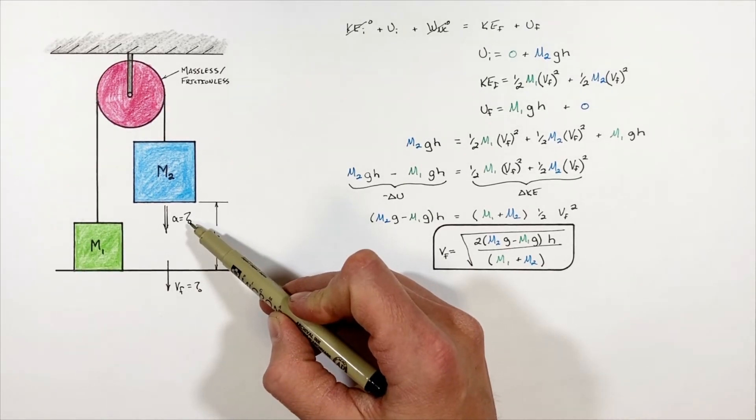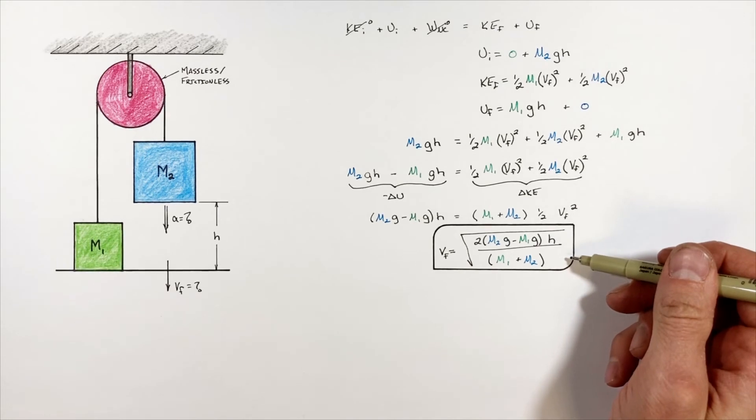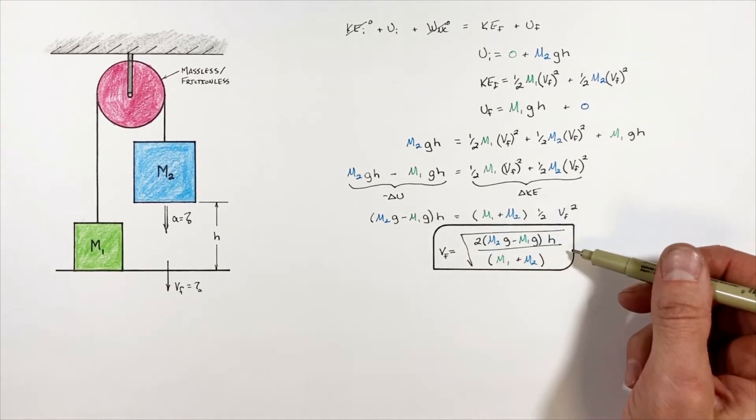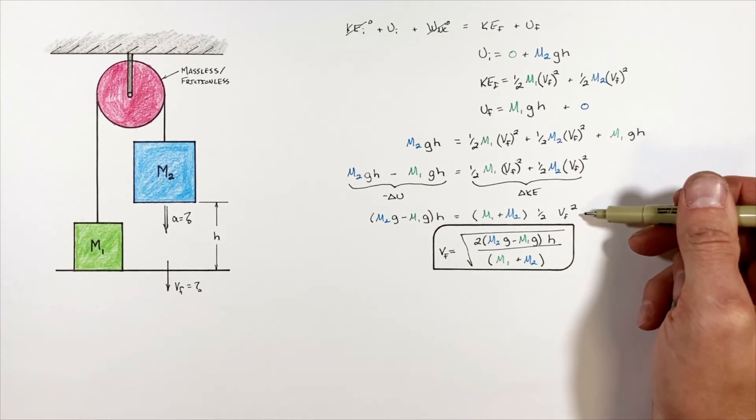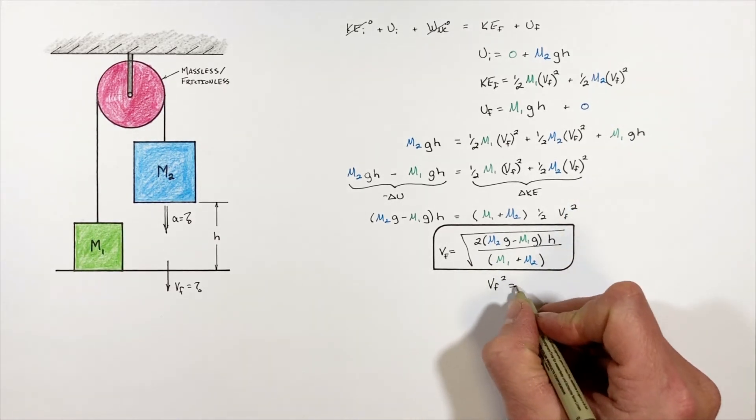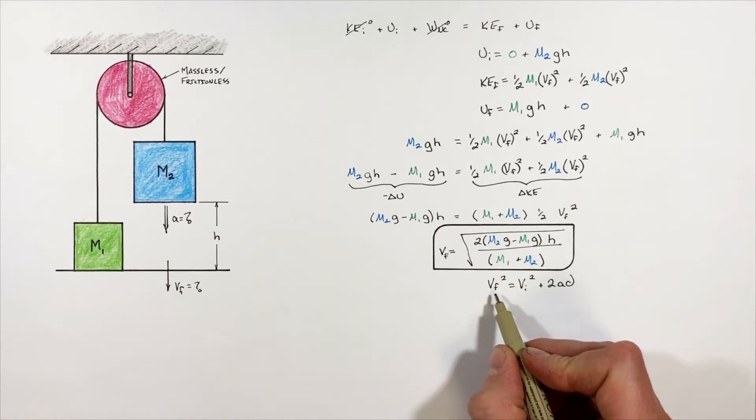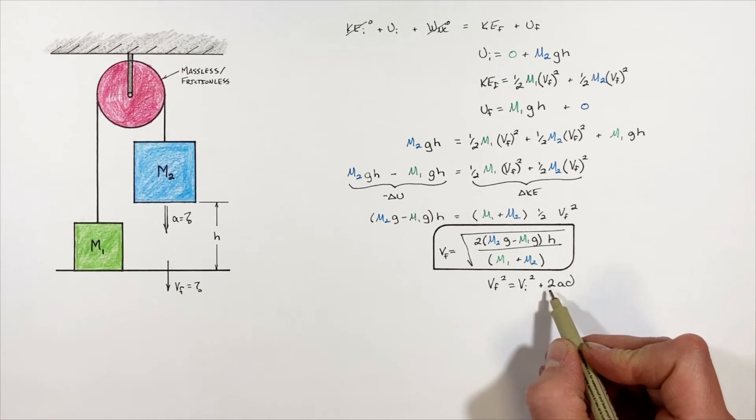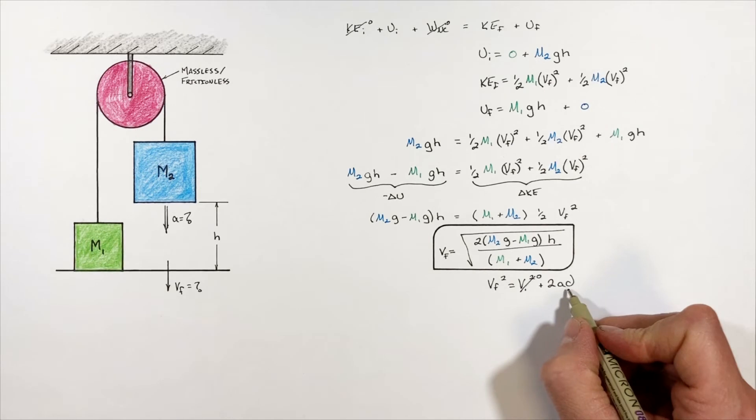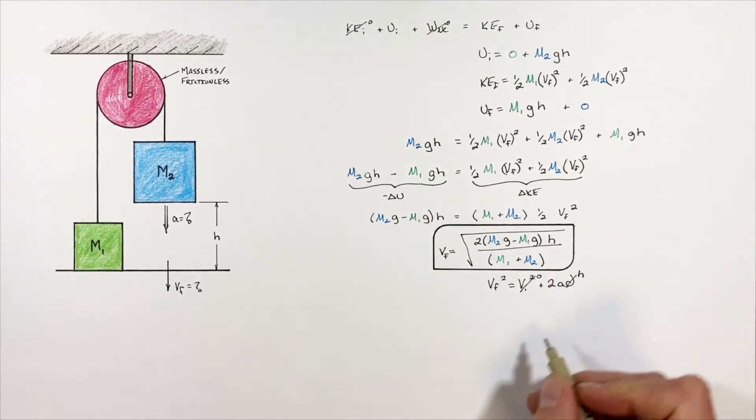So to solve for the acceleration, what I want to do is look back at not the expression for final velocity, but rather this line just before it, where we had this Vf squared term. And what we're going to do is apply a kinematic equation to this, where final velocity squared is equal to the initial velocity squared plus 2ad. In this problem realize the initial velocity was zero and the displacement is what we're calling h.